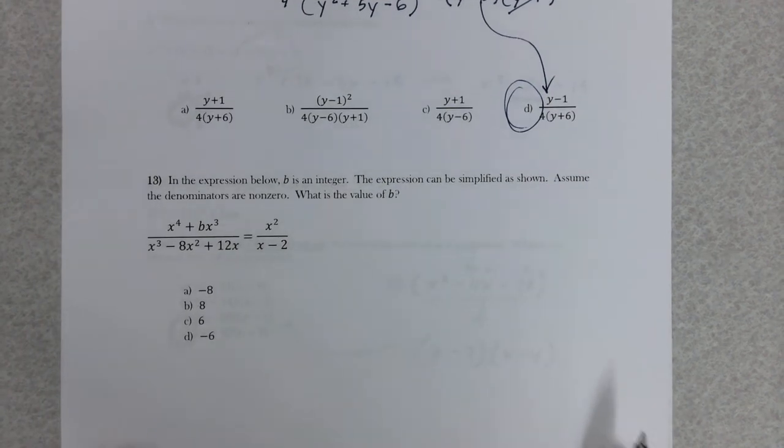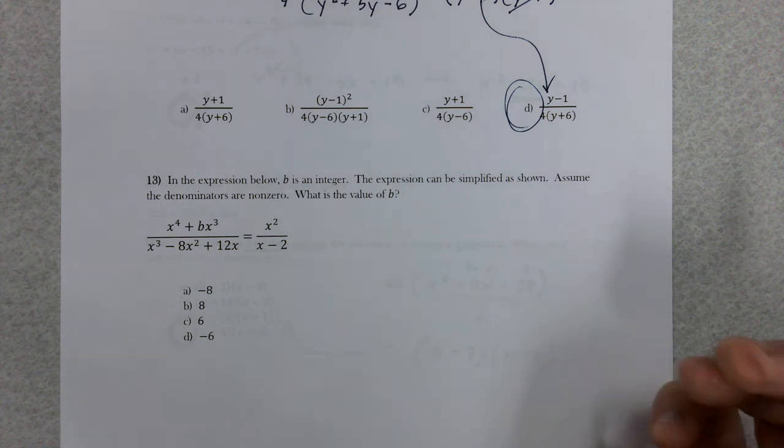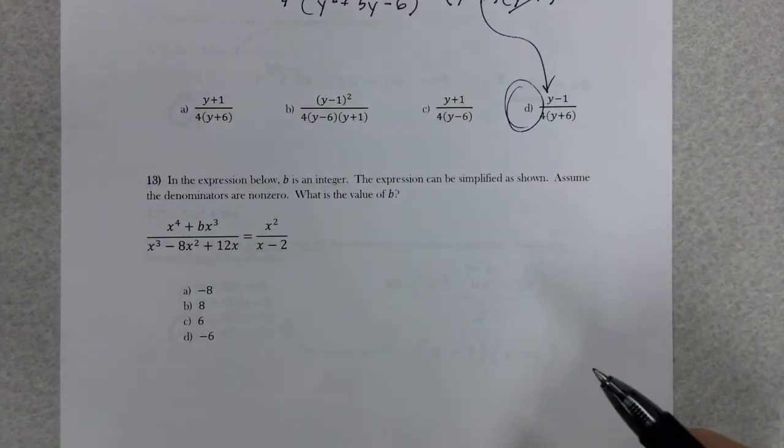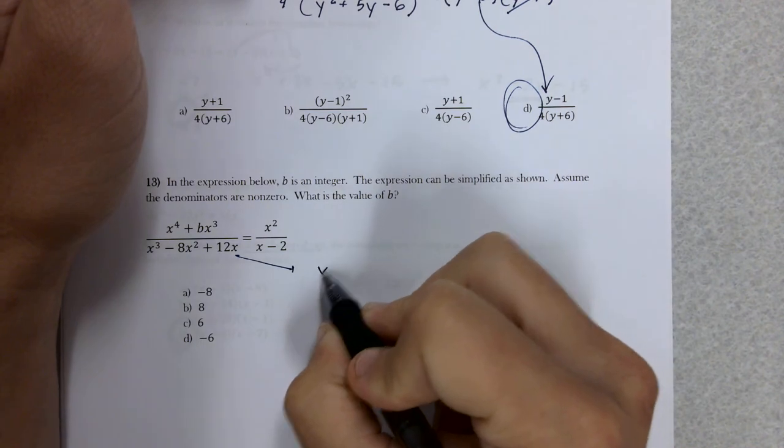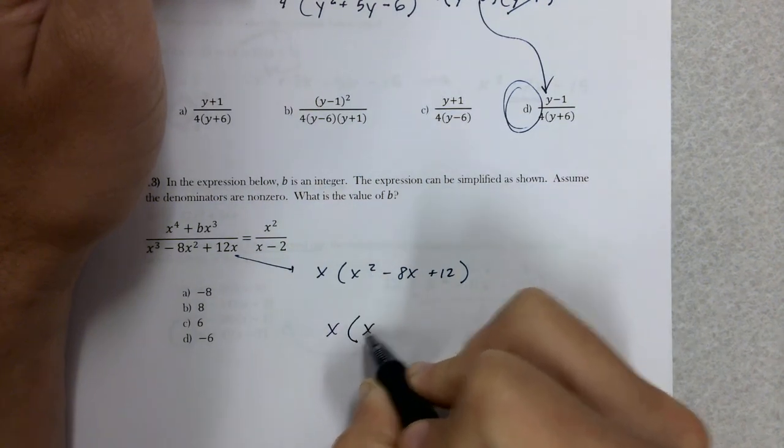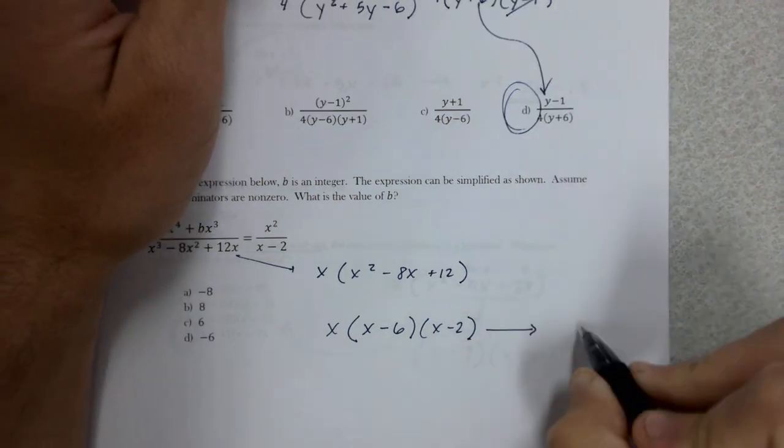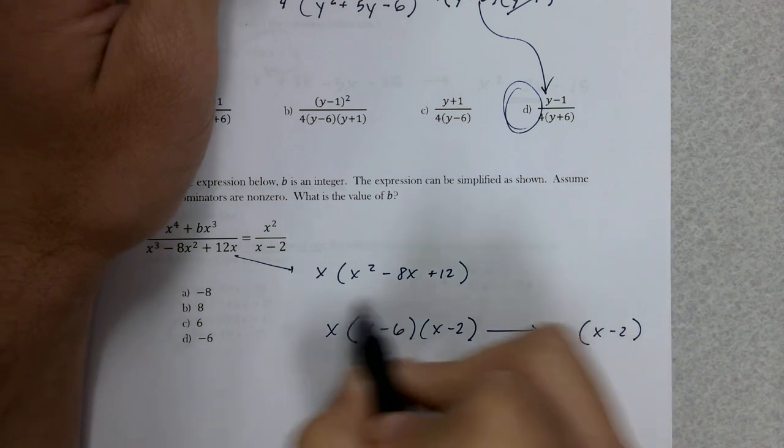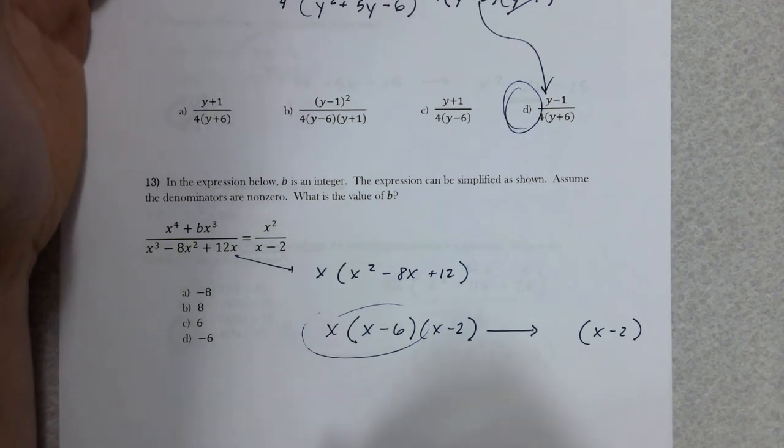Last question, number 13. In the expression below, B is an integer. The expression can be simplified as shown. Assume the denominators are non-zero. What is the value of B? It's kind of like number 11, a little bit harder. What I would do is start with what you know. You can simplify the denominator. You can factor out the x. Then you're left with a trinomial, which you guys are good at factoring. We can end up with a final factored version of the denominator. The denominator ends up as x minus 2, which means we got rid of these two things.